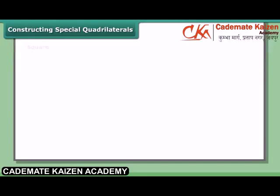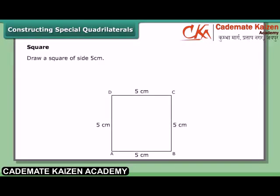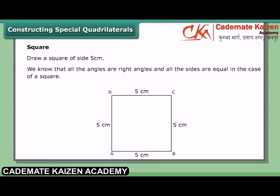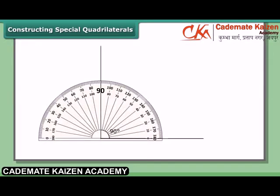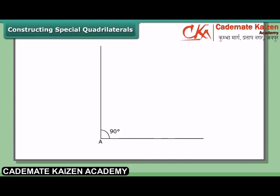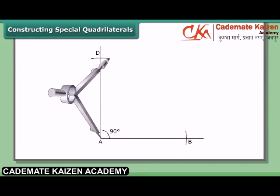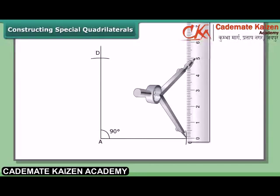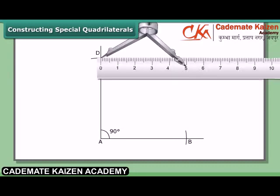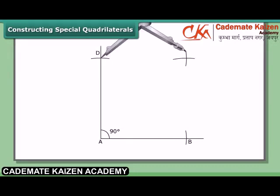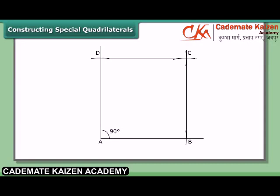Constructing a special quadrilateral — the square. Draw a square of side 5 cm. We know that all angles are right angles and all sides are equal in a square. Steps: Draw a right angle at point A using a protractor or compass and ruler. Set the compass to 5 cm and cut off sides AB and AD along the arms of the right angle. With B as center and the same radius, draw an arc. With D as center and the same radius, draw an arc to intersect the first. Join point C where the arcs meet to B and D. Then ABCD is the required square.